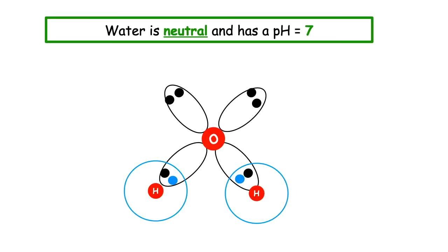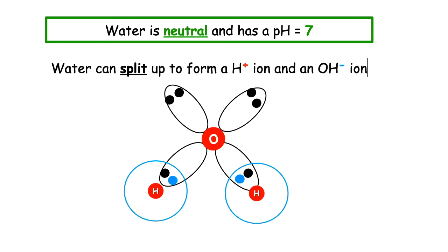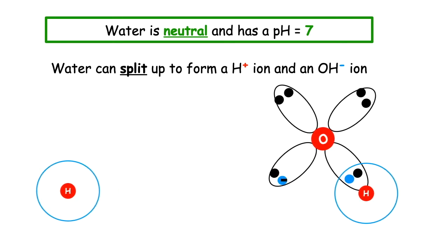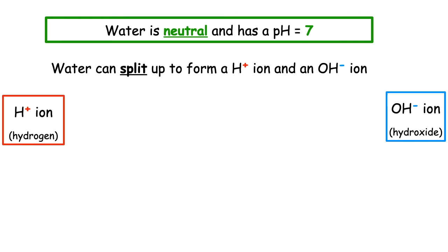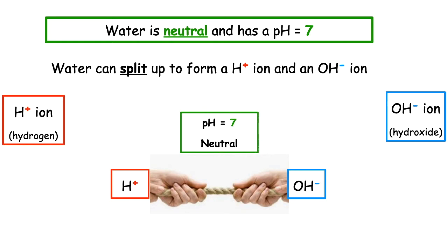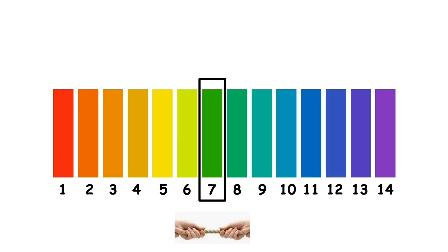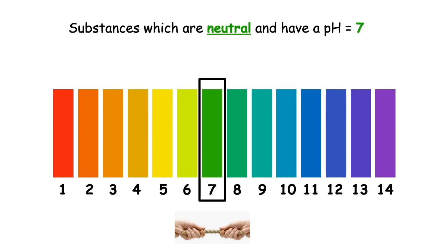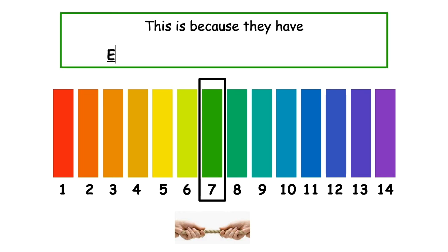Water is neutral and has a pH equal to 7. What we can see is the covalent sharing diagram of a water molecule. A water molecule can split up to form an H+ ion and an OH- ion. We call the H+ ion the hydrogen ion and the OH- ion the hydroxide ion. Because we have the same number of H+ and OH- ions, the term we use to describe this is neutral.